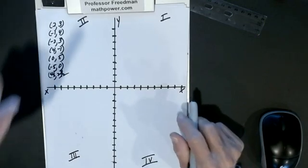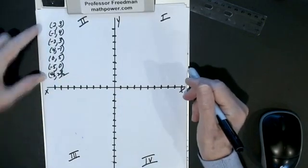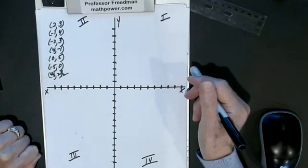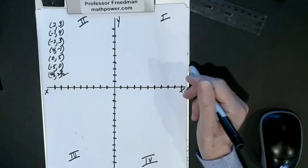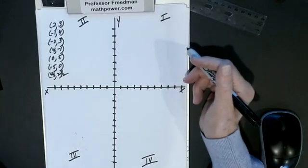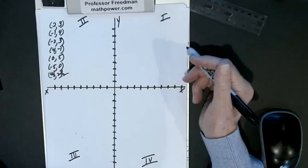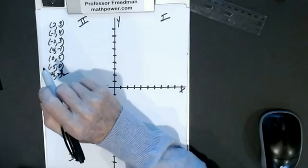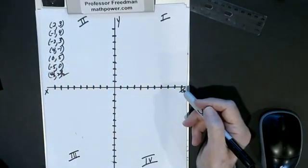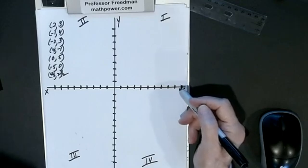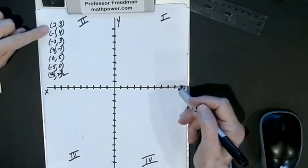I want to plot these points that I have listed over here. It's a coordinate pair. That means the point is in alphabetical order—the first coordinate is always x, the second one is always y. So this is saying x is two, y is three. It takes two coordinates to make a point.